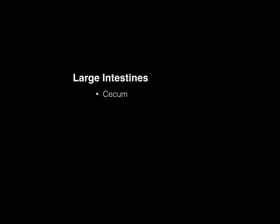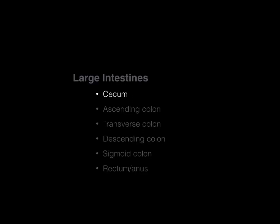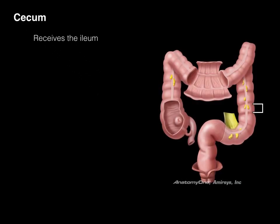The large intestines have the following components: the cecum, ascending colon, transverse colon, descending colon, sigmoid colon, rectum, and anus. The cecum is the first part — a blind-ended pouch at the bottom right quadrant of the abdomen. The ileum empties into the cecum. On the bottom of the cecum is another blind-ended pouch called the vermiform appendix, or just appendix. It's a vestigial organ that doesn't do much except store lymphatic waste, and if it gets inflamed, it's a problem.